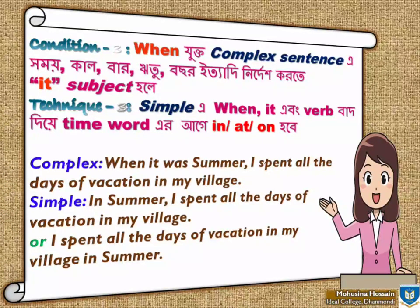In third condition, Complex এ যদি 'When' যুক্ত হয়, এবং সময়, কাল, বার, ঋতু, বছর, সাল ইত্যাদি নির্দেশ করতে 'it' subject হিসেবে ব্যবহার করা হয়, তখন Simple করতে গেলে Subordinate Clause এর সব কিছু বাদ দিয়ে, only time word টি লিখতে হবে, এবং তার আগে In, At, On বসবে। For example: 'When it was summer, I spent all the days of vacation in my village' — এটির Simple আমরা দুইভাবে করতে পারবো। Subordinate Clause থেকে preposition যুক্ত time word টি Principal Clause এর আগে বা পরে রাখতে পারি। Simple টি হবে: 'In summer, I spent all the days of vacation in my village,' অথবা 'I spent all the days of vacation in my village in summer.'